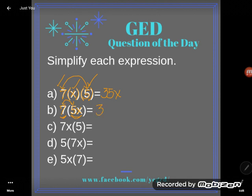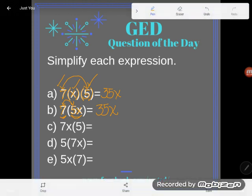We can just multiply together the 7 and the 5. And we can just shove the x on the back side to say it's multiplying with 35. 7 times 5x would be 35x.